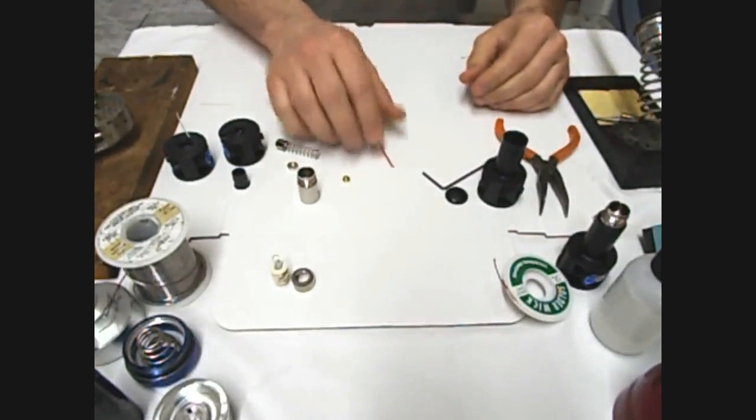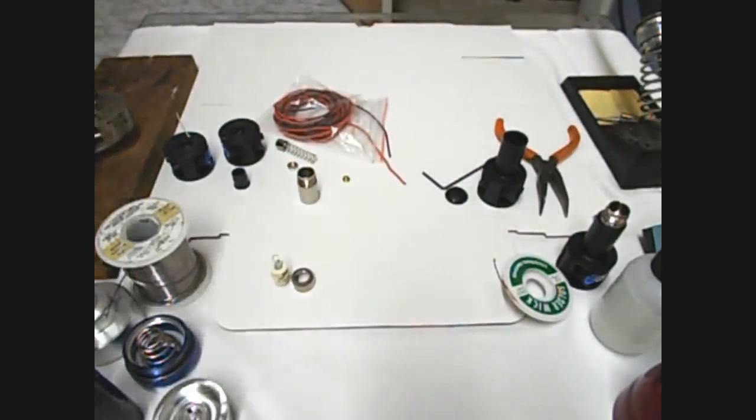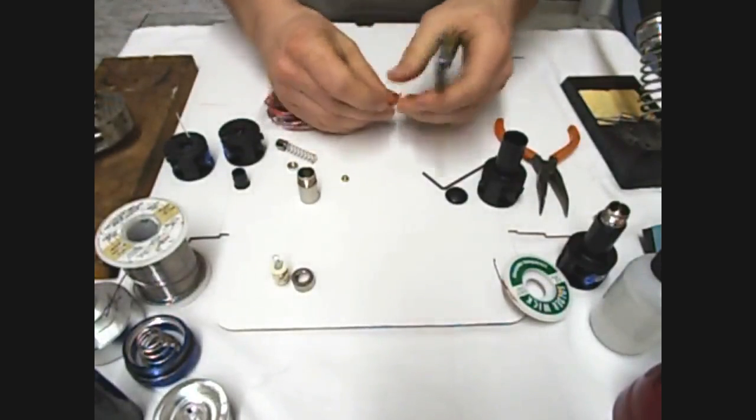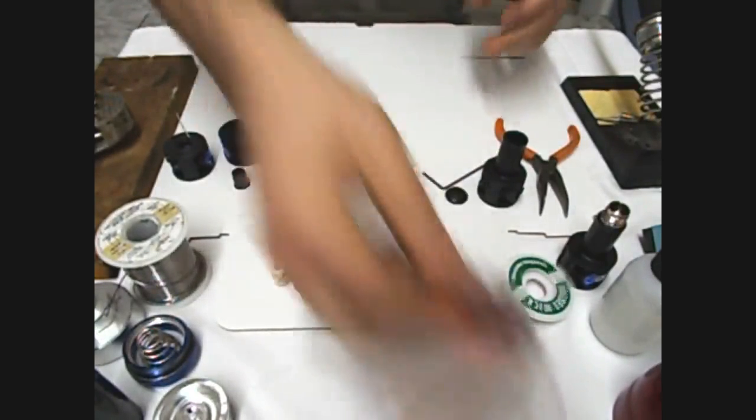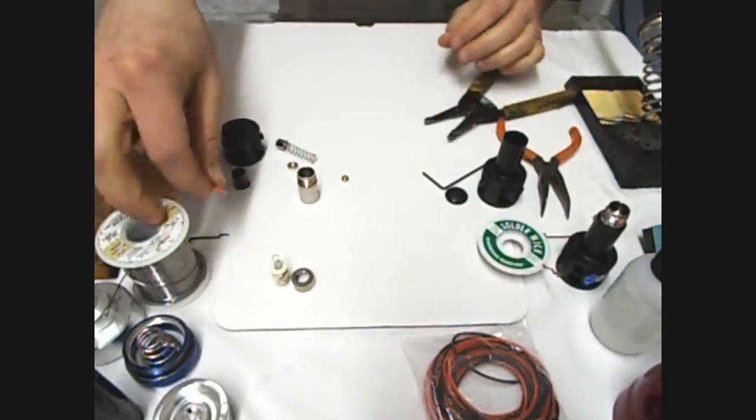And it's got this insulation to keep you from dropping little pieces of wire down inside your light. So we're just going to get a little piece here and then you want to strip the end so it's like that.